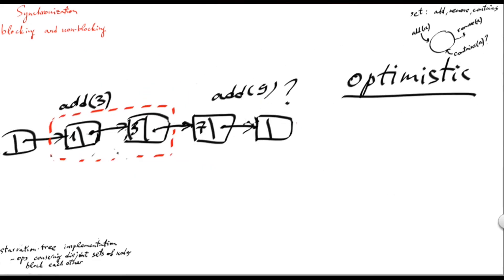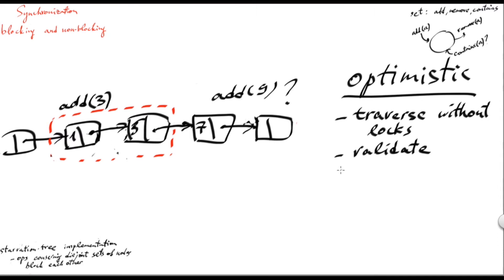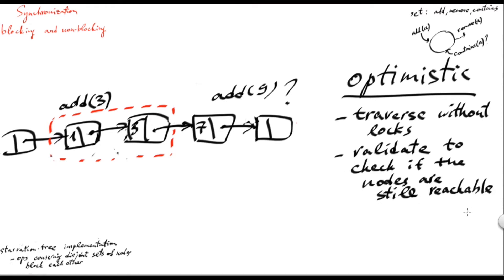In the optimistic approach, you avoid using locks on traversal — you traverse the list without locks. Then when the area of the list which interests us is found, we validate to check if the nodes are still reachable: the nodes which are subject to modification or to the response of the operation.